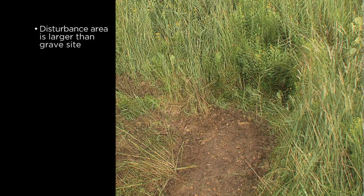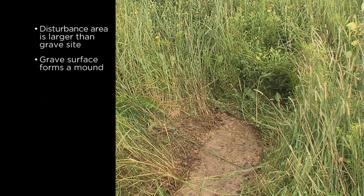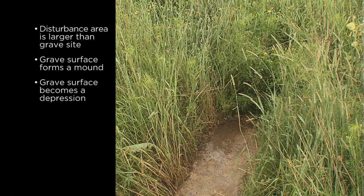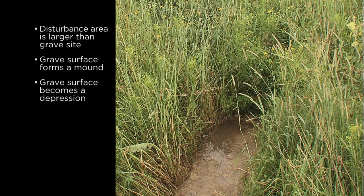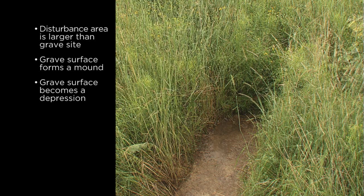The grave itself will undergo a whole set of changes over time. Because of the displacement of the corpse and because the disturbed soil has been mixed with air, you cannot get a flat surface, so typically there is a mound of earth over the grave. With rain and time, the soil will begin to level out and then later will form a shallow depression. Rainwater will collect there, and that is yet another sign that the ground has been disturbed.